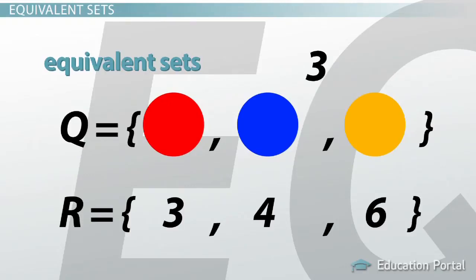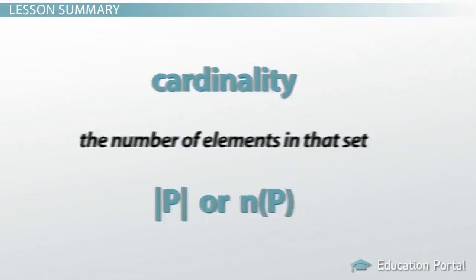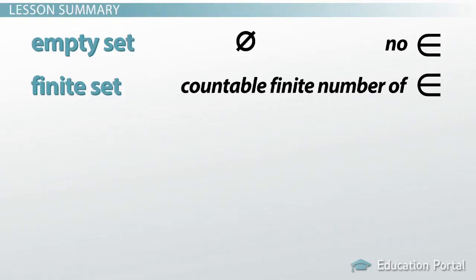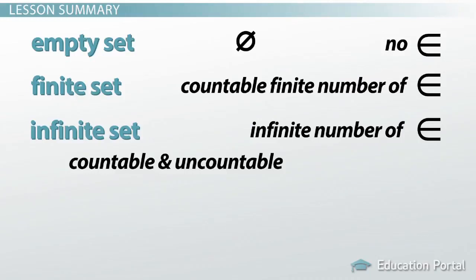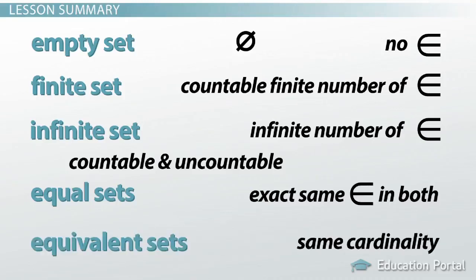In summary: the cardinality of a set is the number of elements in that set. An empty set is one that doesn't have any elements. A finite set has a countable, finite number of elements. An infinite set has an infinite number of elements, and there are two types: countable and uncountable. Equal sets have the exact same elements in both, while equivalent sets have the same cardinality.